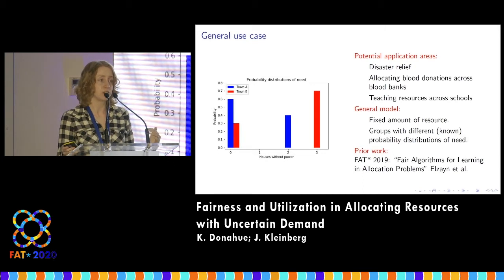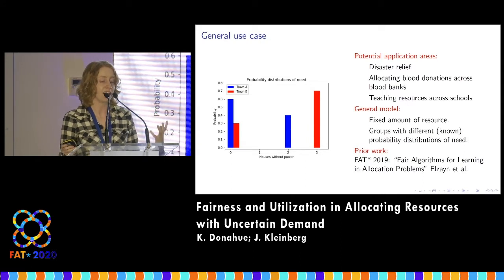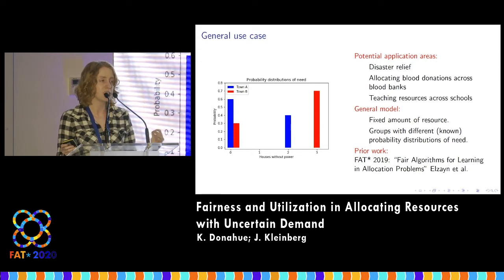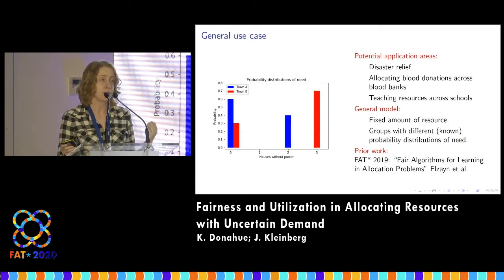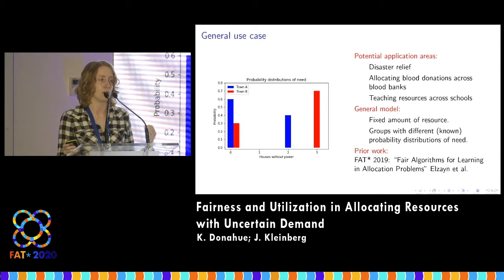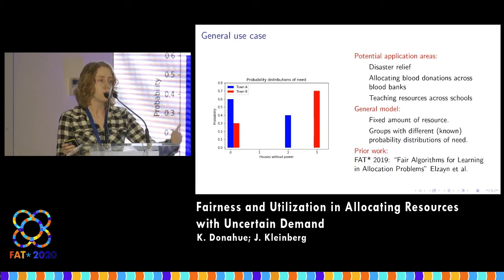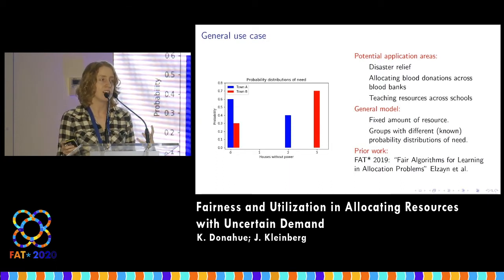If you're not interested in disaster relief, please stay with me — this is a motivating case for the paper but not the only one. You could think of a similar story around allocating blood donations across blood banks or teaching resources across schools — anything with a fixed amount of resource and probabilistic demands. We're not the first people to talk about this. Hadiel Zane, who's talking right after me, wrote a fantastic paper last year on this exact problem, providing much of the framework and definitions. Their case was where you don't know the distributions in advance and are learning them through censored one-sided feedback. In our case, we assume we do know the distributions and instead aim to give theoretical bounds for performance.